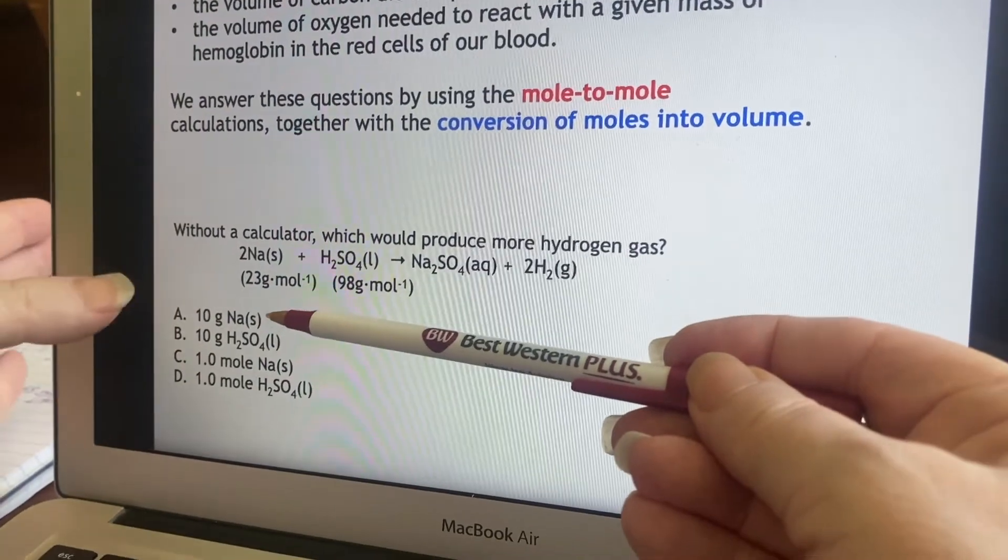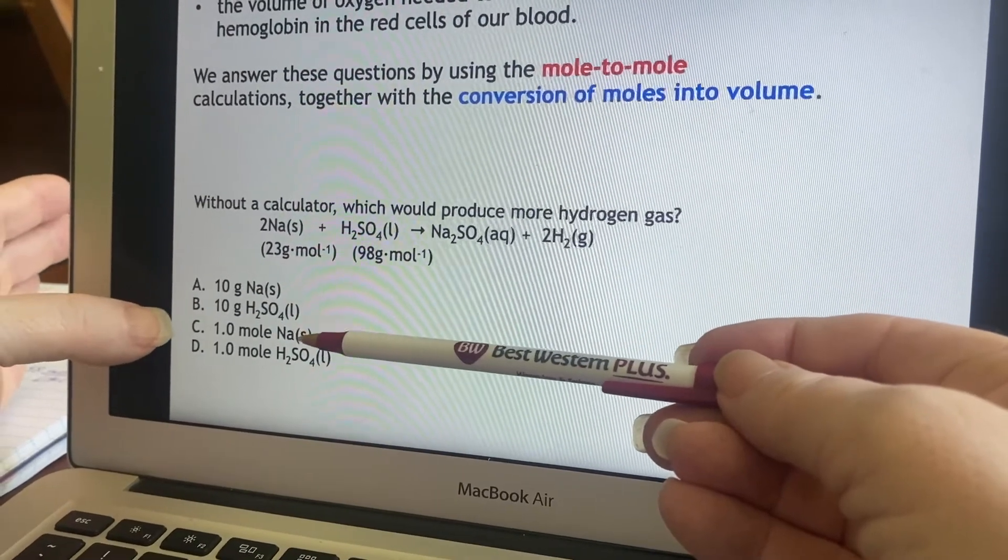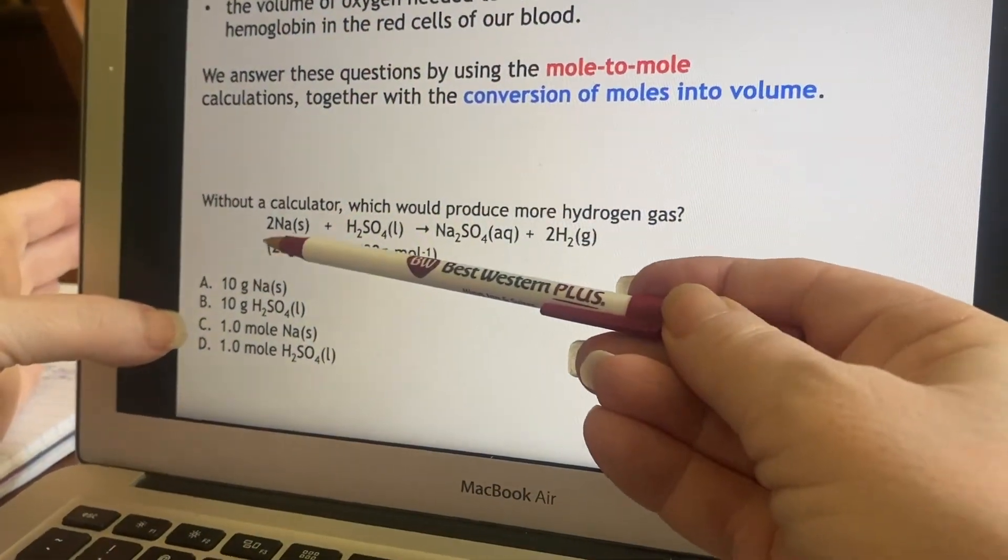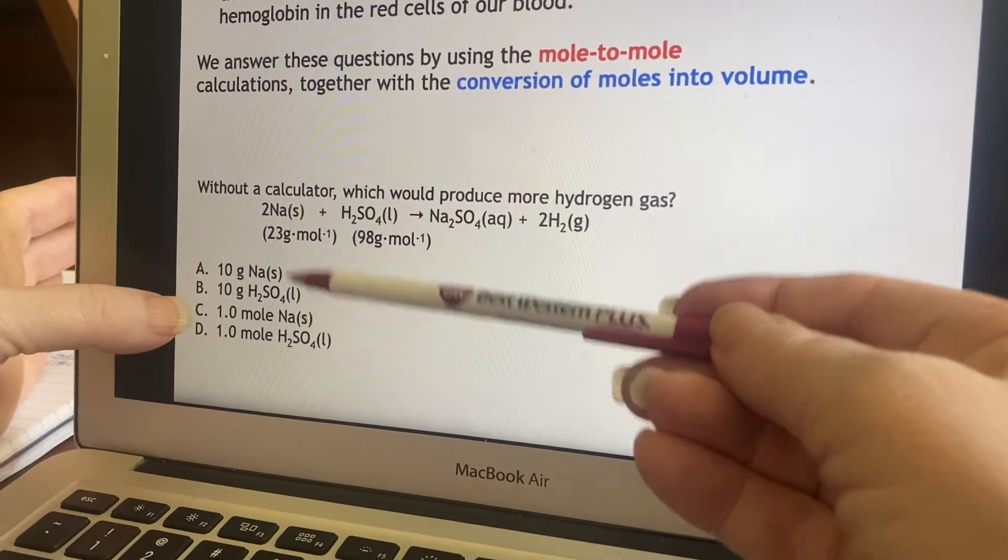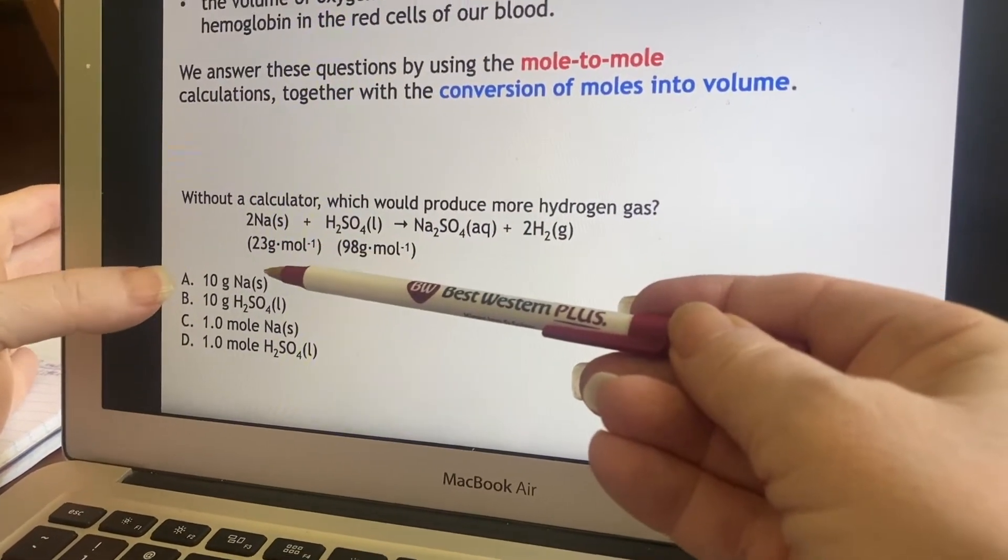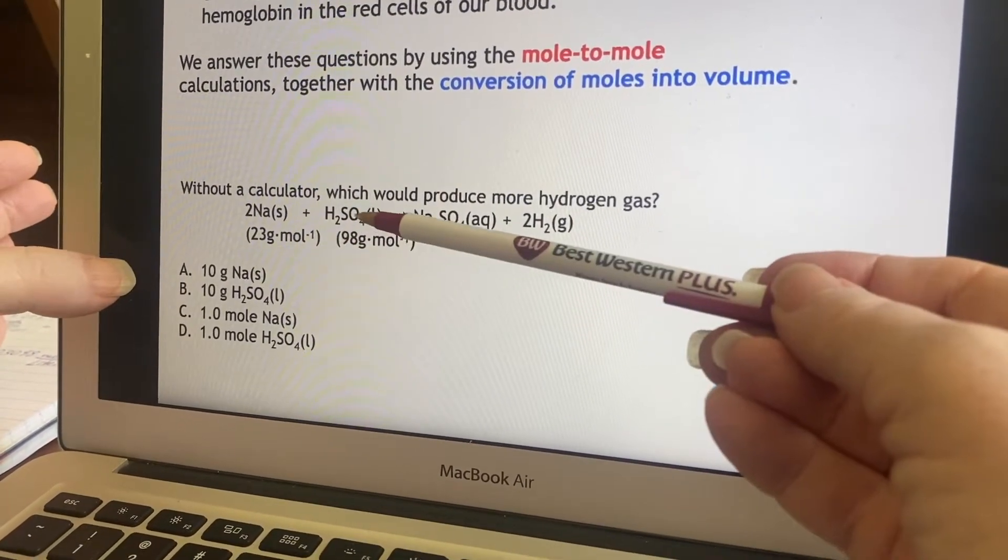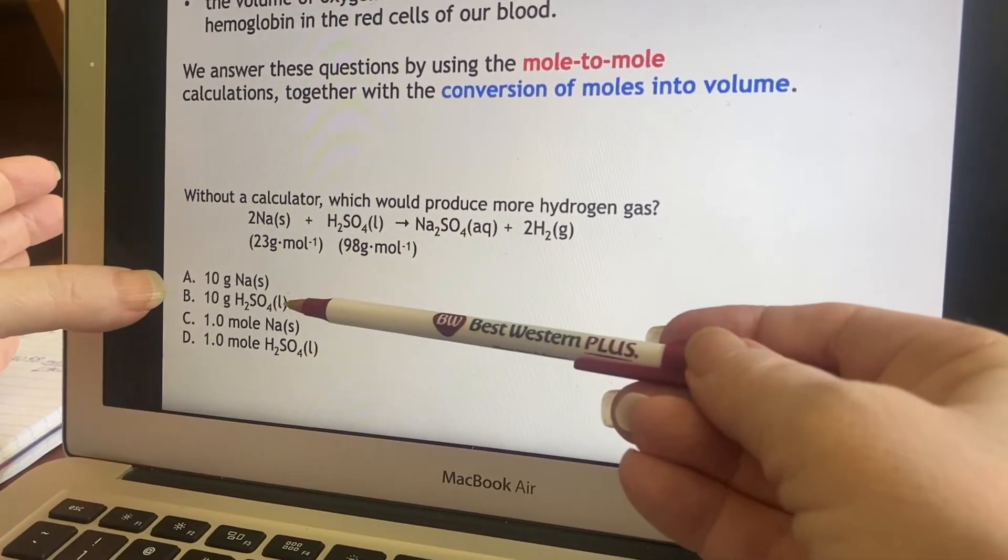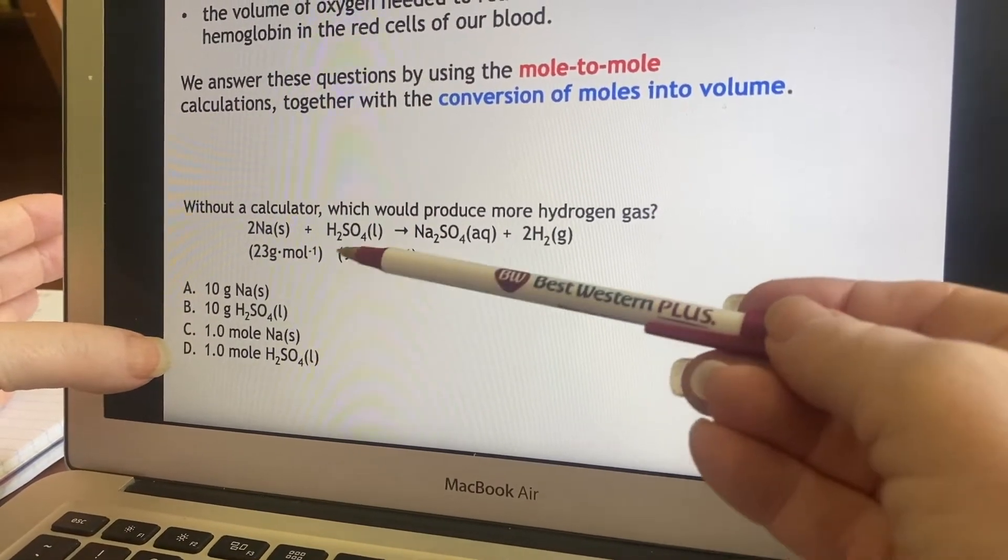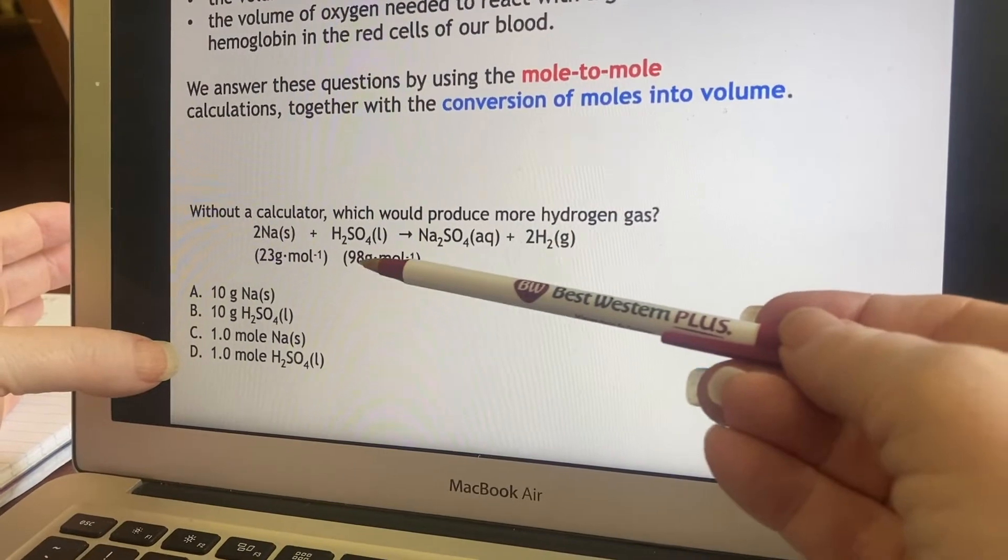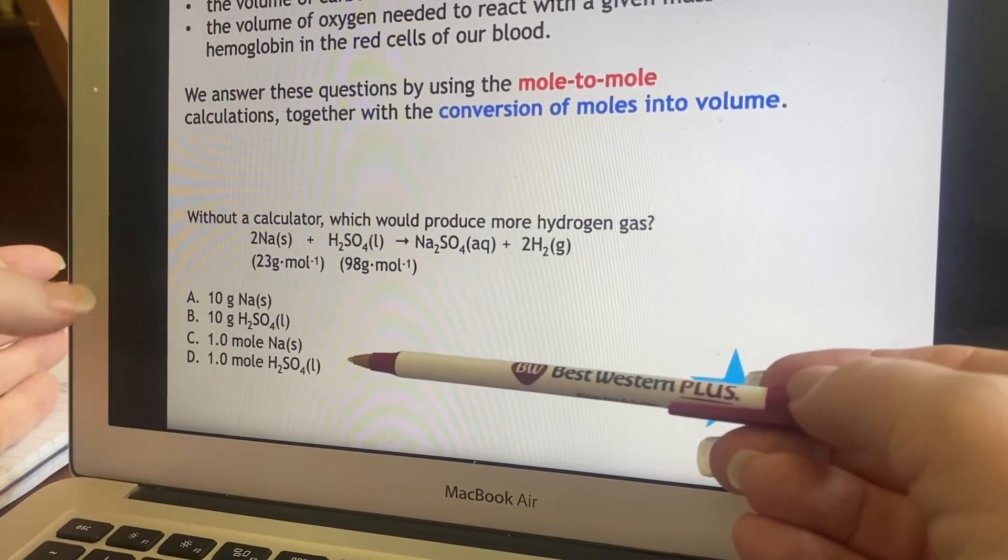We're going to try to do this in a logical fashion, so we'll talk about sodium first. 10 grams of sodium compared to one mole of sodium. I find that 23 grams per mole is the molar mass, so a mole of sodium would have a larger mass than 10 grams would. So A, I have eliminated. Let's do the same thing with the sulfuric acid. They're offering me 10 grams of sulfuric acid or a mole of sulfuric acid. A mole would be 98 grams, which is clearly more than 10 grams. So B is out. Only C and D are still left as a possibility in this problem.